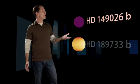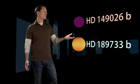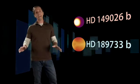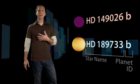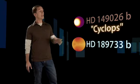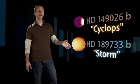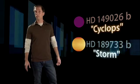Their official names, HD 149026b and HD 189733b, are based on the catalog numbers of their host stars. Personally, I'm going to call them something unofficial but easier to remember: Cyclops and Storm, the hottest and windiest known planets.